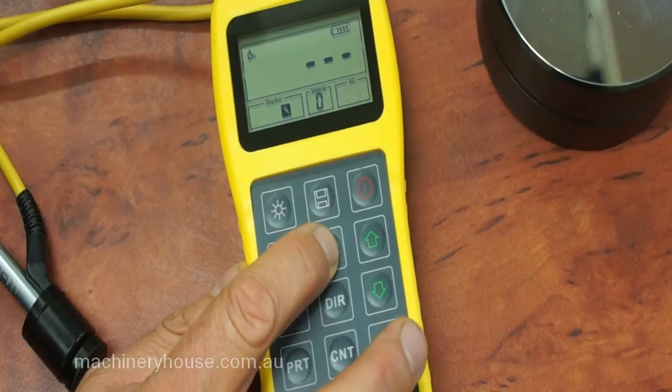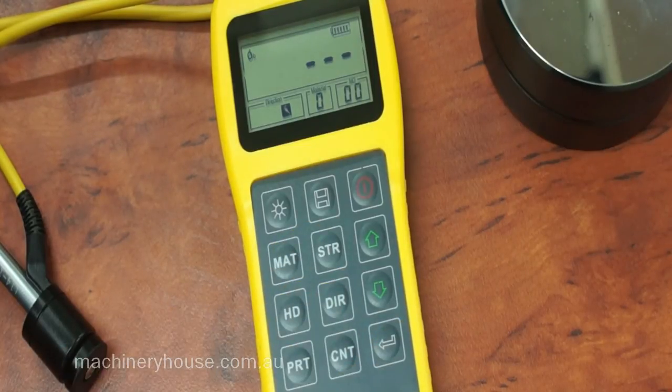The strength button will allow you to toggle between hardness test and tensile strength.